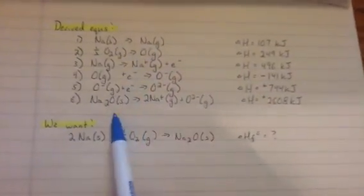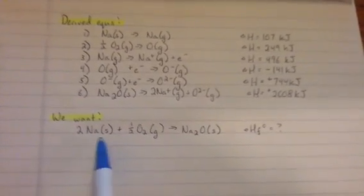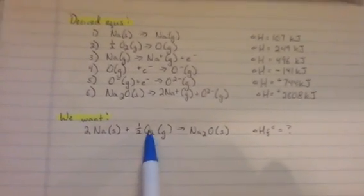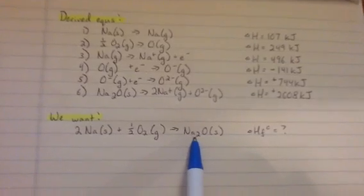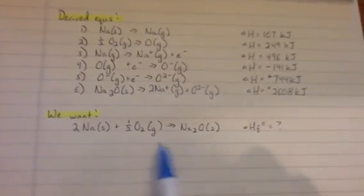So we already got our derived equations in our last video. We know what we want, which is our two Na solid, our two sodium solids plus our one-half O2 gas. It turns into Na2O solid. But we want to find out the delta H of formation of this.